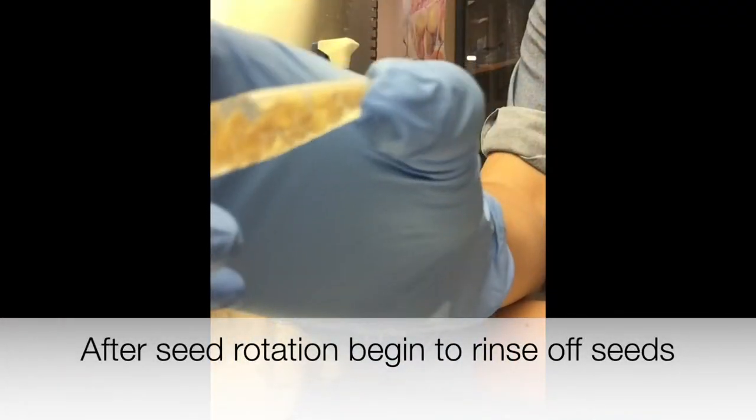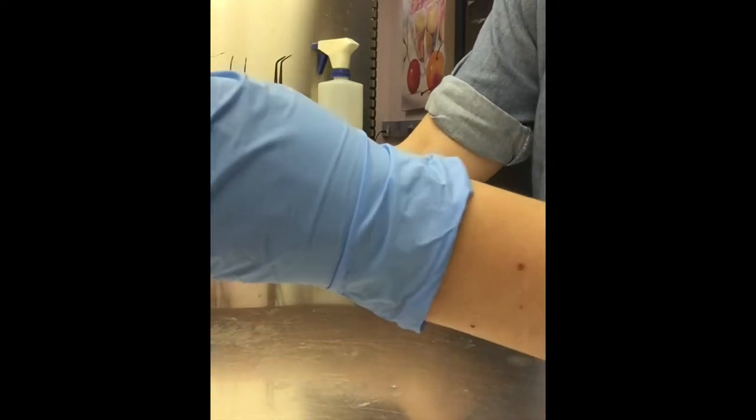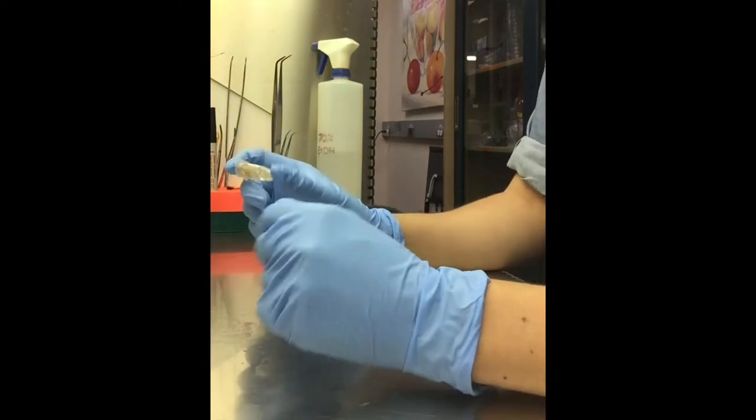Seeds are in the tube, and we want to keep switching them to different tubes because we want to get as much bleach out of it as possible.